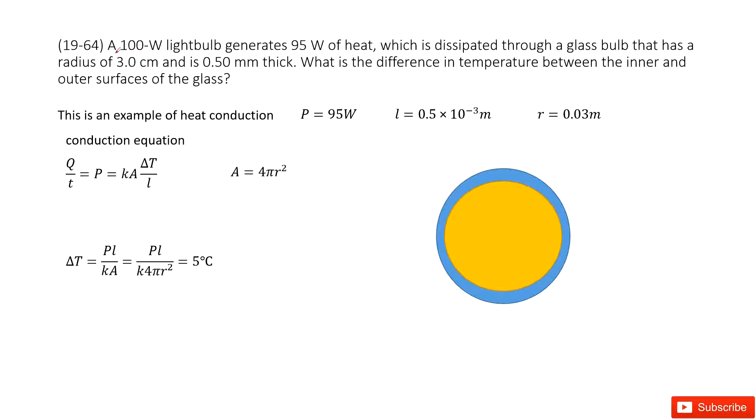See, it tells you this, you need to distinguish it. It tells you this a 100 watt light bulb generates 95 watt of heat. So in this problem, we talk about the heat and first law of thermodynamics. We just care about the heat just generated by this light bulb.